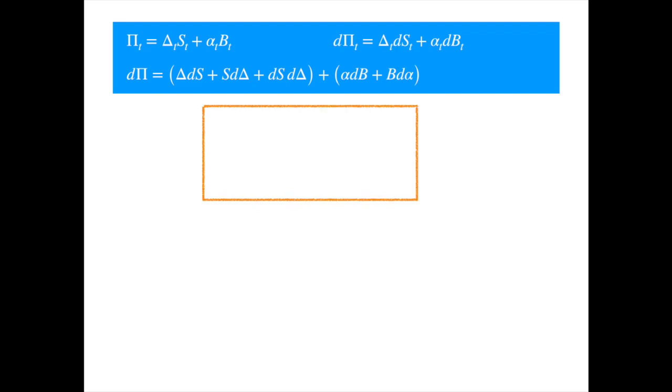Let's say we are at i-1, one step before the ith time. We decide how many units of the stock and the units of the bank account to hold in order to hedge our position.